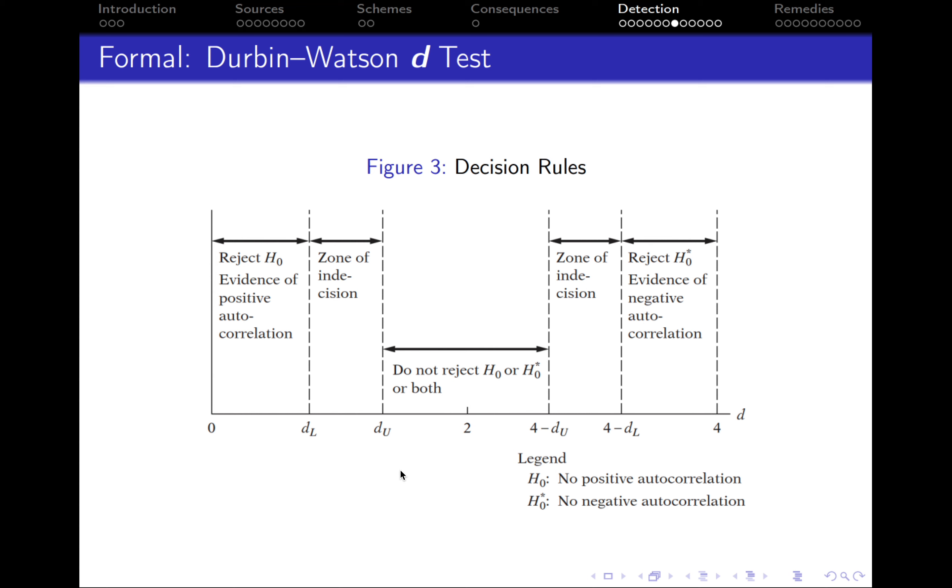So the upper and the lower boundaries. Those are the values that we get from the table for the Durbin-Watson D test. I will share them with you in my files, or you can also find them on the internet. And let's see. So if our estimated D statistic lies between zero and the lower boundary, then we reject the null hypothesis.